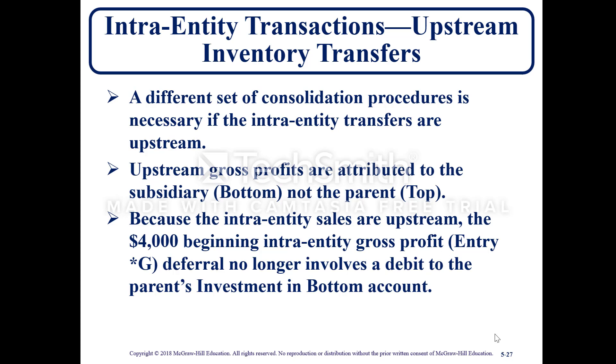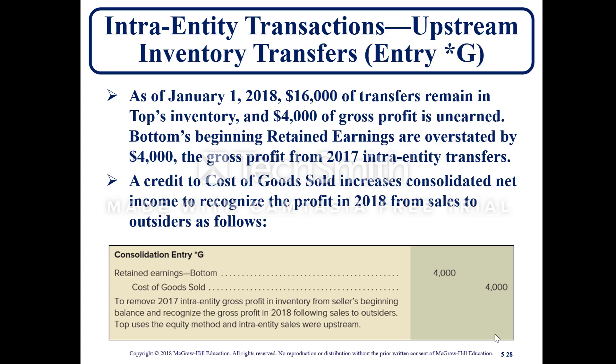For upstream inventory transfers, a different set of consolidation procedures is necessary. Upstream gross profits are attributed to the subsidiary — Bottom — not the parent, which is Top. Because the intra-entity sales are upstream, the $4,000 beginning intra-entity gross profit deferral no longer involves a debit to the parent's investment in Bottom's account. As of January 1st, 2018, $16,000 of transfers remain in Top's inventory and $4,000 gross profit is unearned. Bottom's beginning retained earnings are overstated by $4,000 — the gross profit from the 2017 intra-entity transfers. A credit to cost of goods sold increases consolidated net income to recognize the profit in 2018 from sales to outsiders. Consolidation entry *G for upstream debits Bottom's retained earnings and credits cost of goods sold to remove the 2017 intra-entity gross profit and recognize the gross profit for 2018 following sales to outsiders.